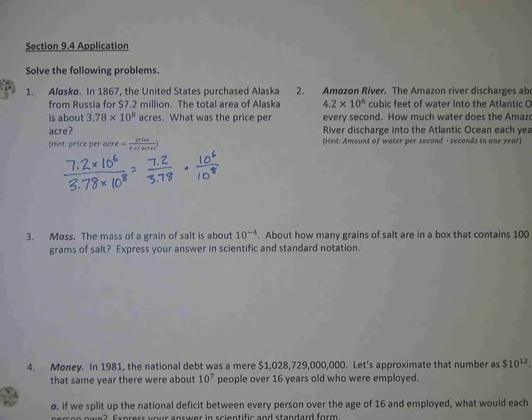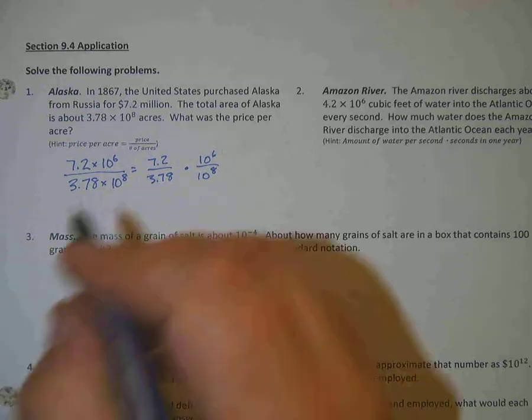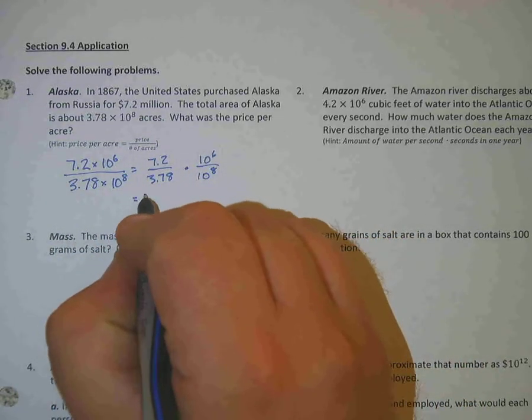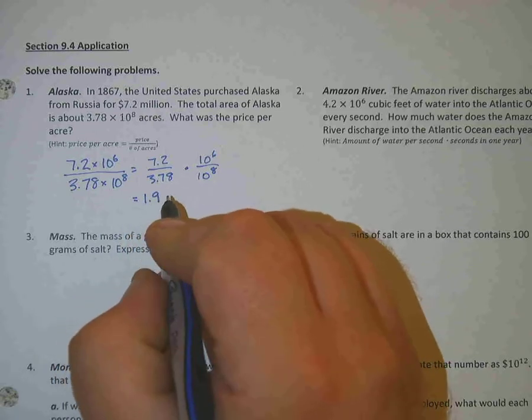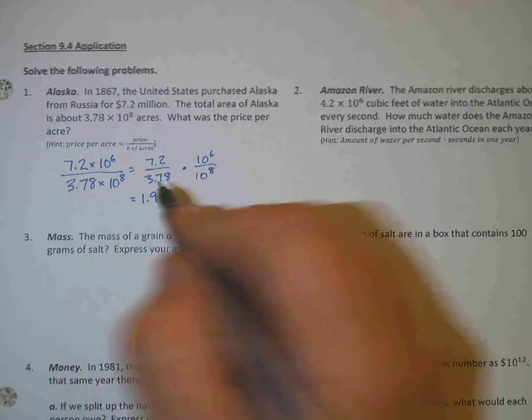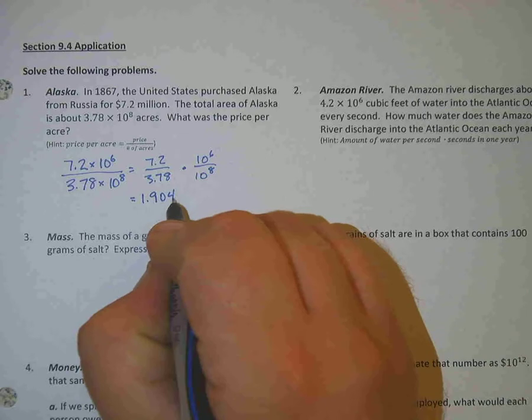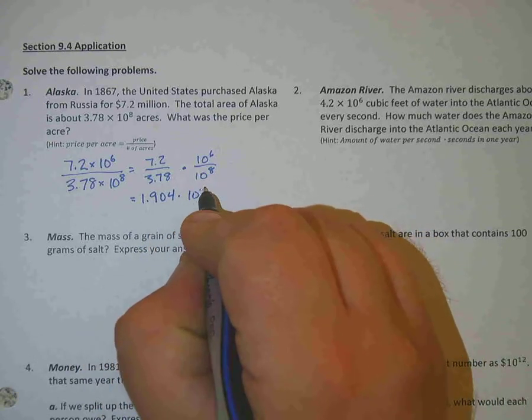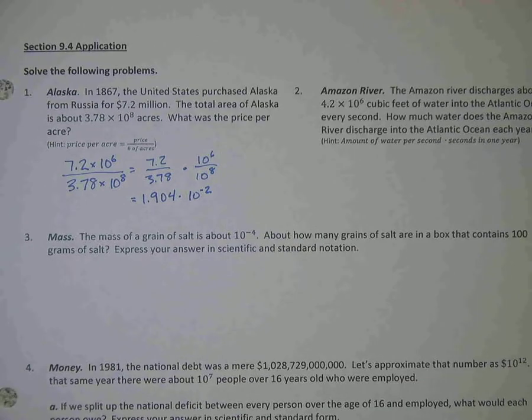Now when I do that, when I go 7.2 divided by 3.78, I get, let's see, 1.9. So it's going to be 1.904. And then 10 to the 6th divided by 10 to the 8th is 10 to the negative 2nd power. So that's the number of dollars.